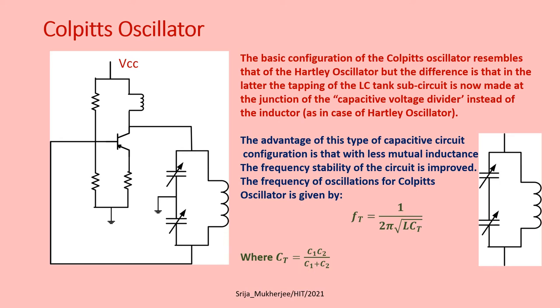The Colpitts oscillator has a 180-degree phase shift. This is the basic LC tank circuit operation which we have already seen in the video. This is the key difference between the Hartley and Colpitts oscillator — in the Colpitts, the capacitor of the LC tank circuit is tapped.